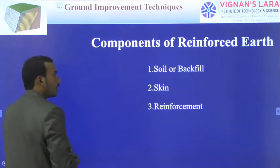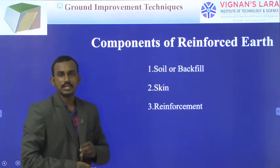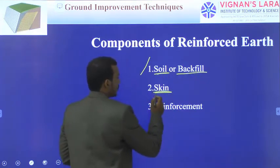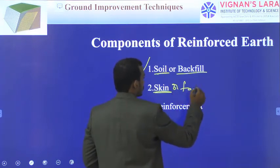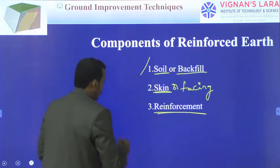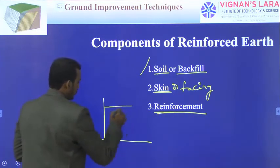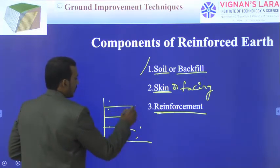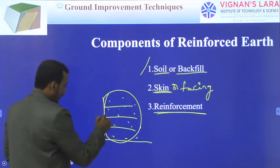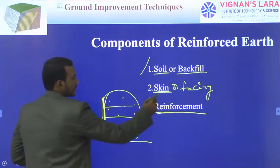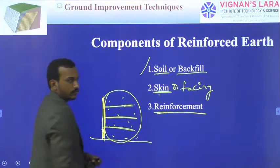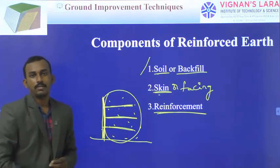Coming to the next topic: components of reinforced earth. Reinforced earth consists mainly of three components. The first is soil or backfill. The second is skin or facing — the vertical face of the structure. The third is reinforcement — the reinforcing elements in horizontal layers. From the facing, we provide reinforcement bars in the horizontal direction into the soil, then backfill the soil. These are the three components of reinforced earth.